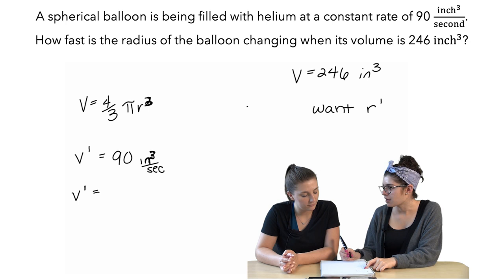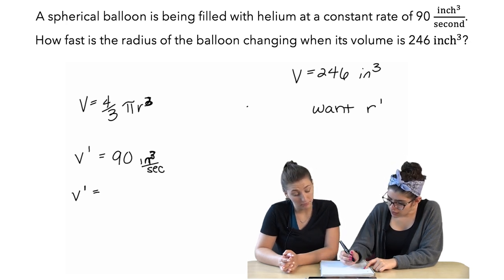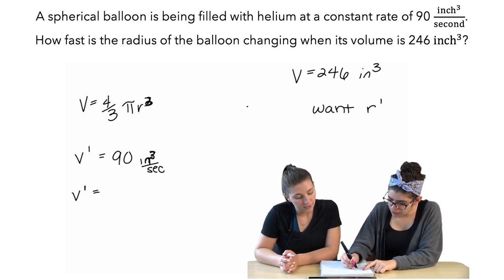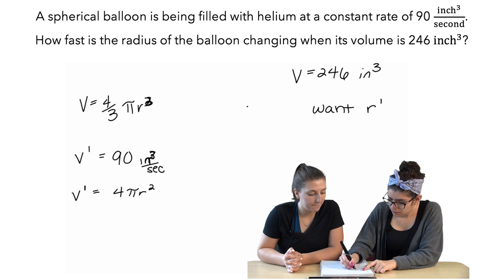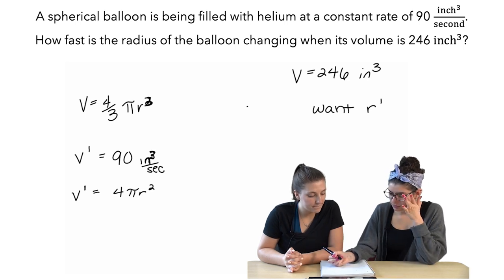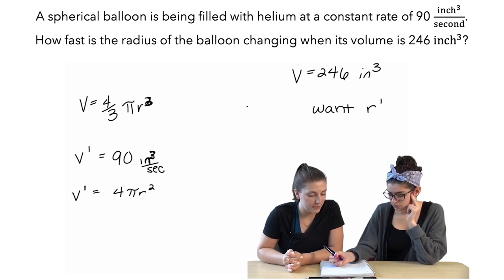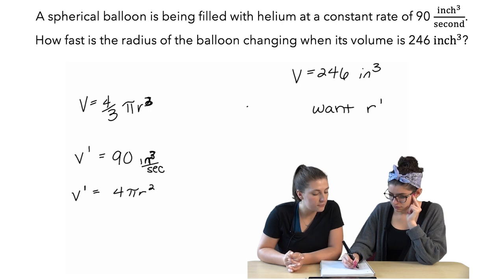So, maybe if we find v prime, you think that would help? Maybe. Okay. So, then v prime would be 4 thirds... Well, wouldn't the 3 just cancel? Oh, yeah. So, it would be 4 pi r squared. That's it? Mm-hmm. So, 4 pi r squared equals 90. Oh, and we could solve for that.